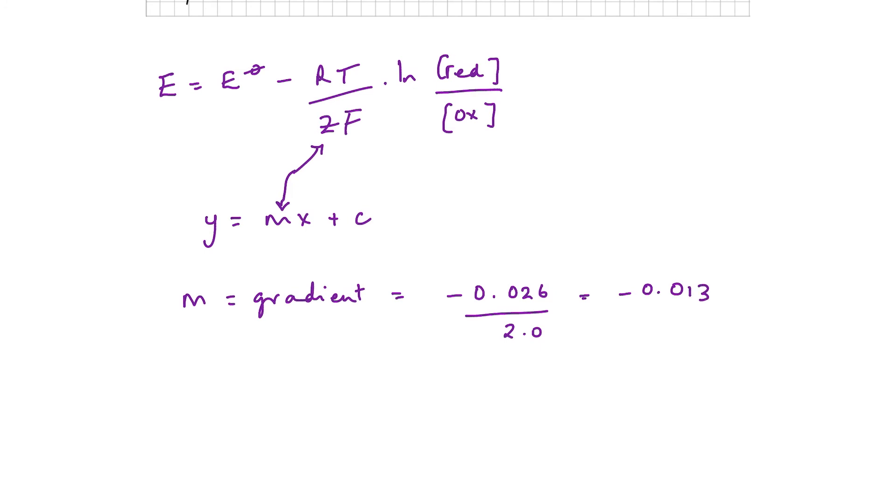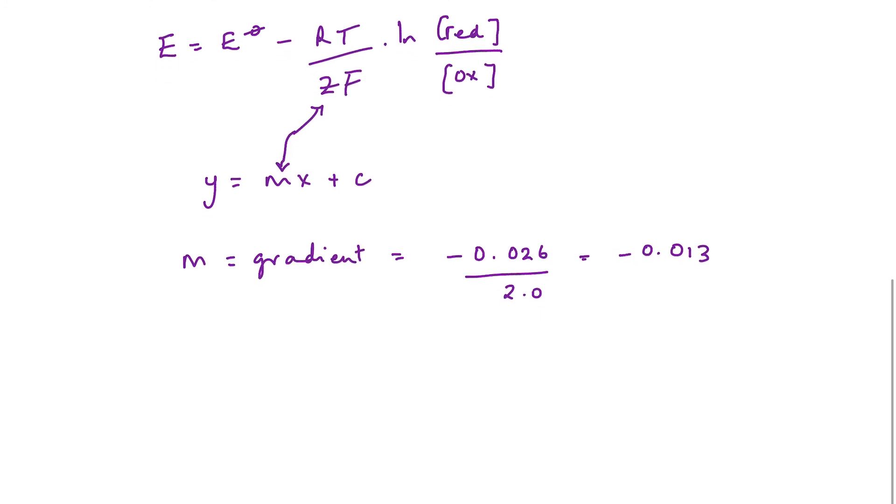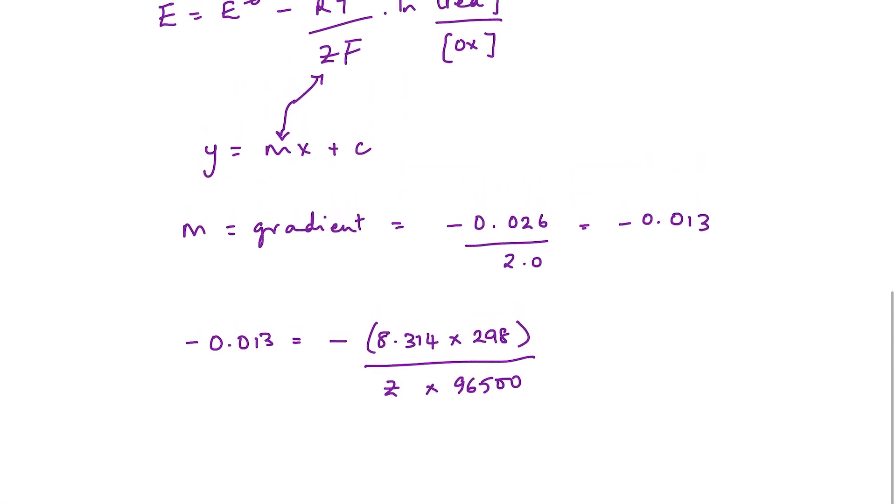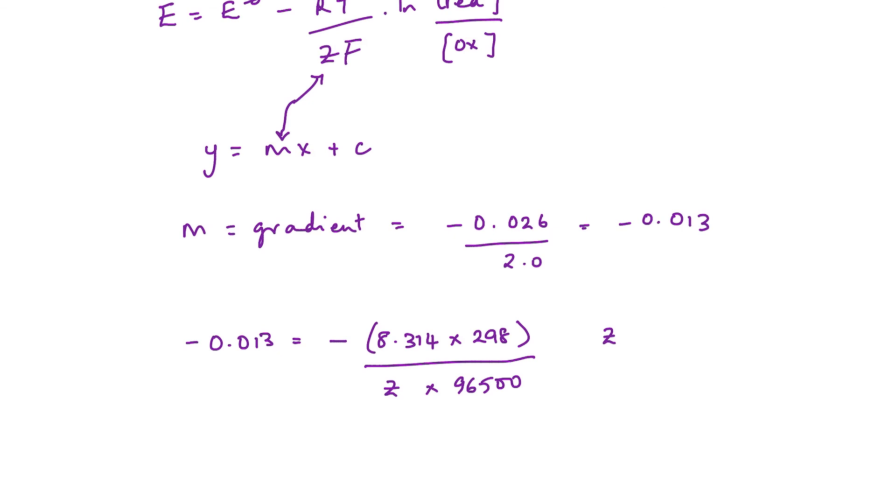Minus 0.013 is equal to minus RT, so that's 8.314. We're going to assume that this was at 298K—I should have said that in the question—over z times 96500. And when I rearrange that, so it comes out to be 1.98, which is basically 2. So the charge on this ion is 2+.